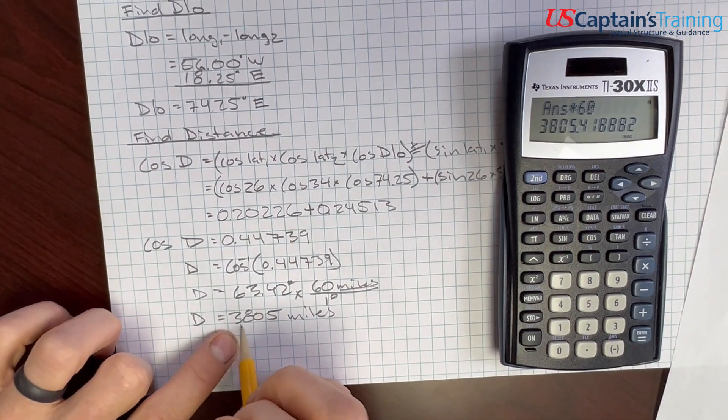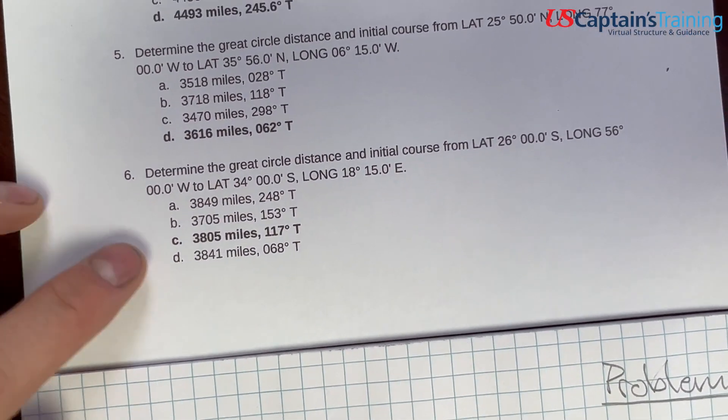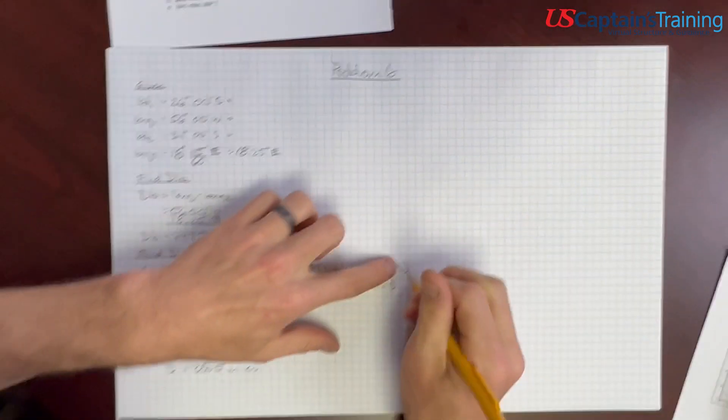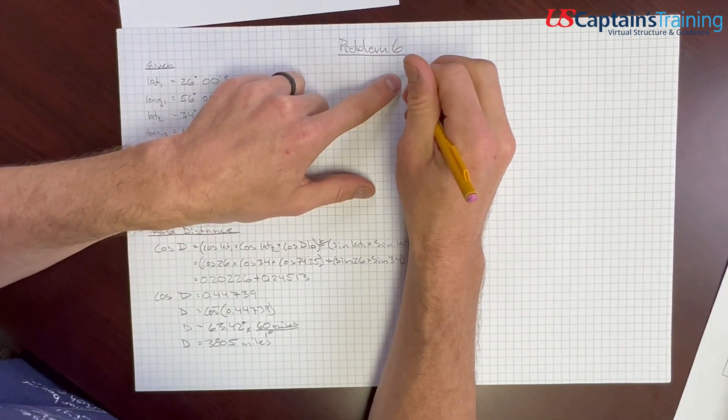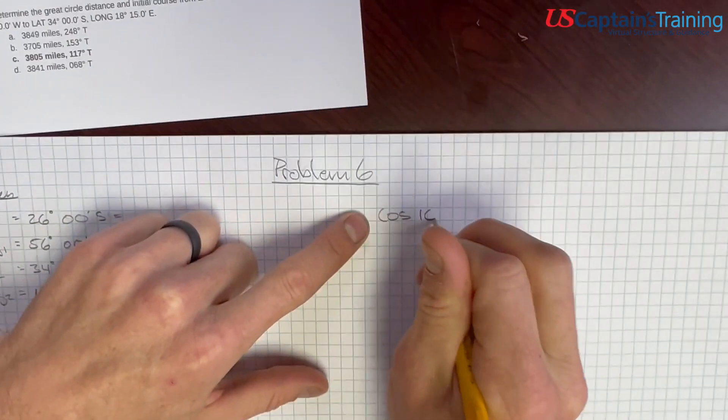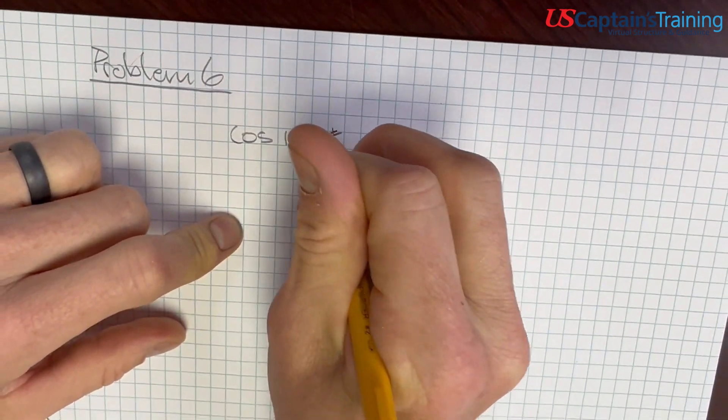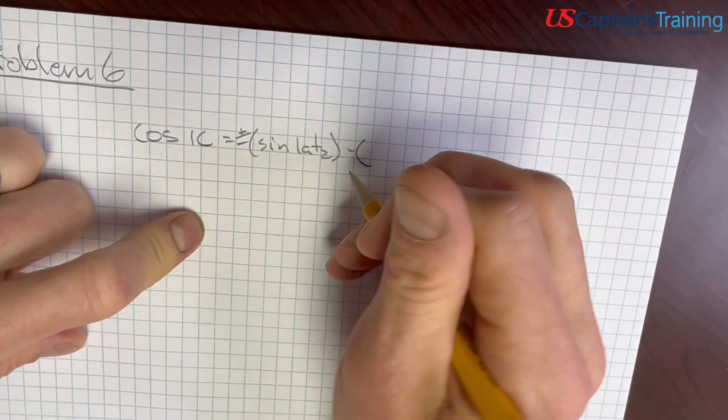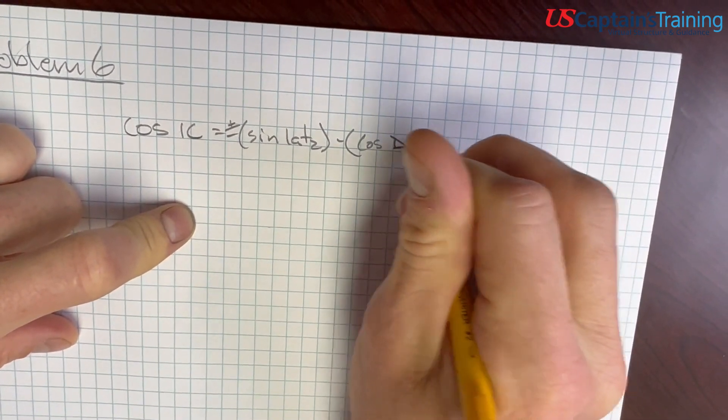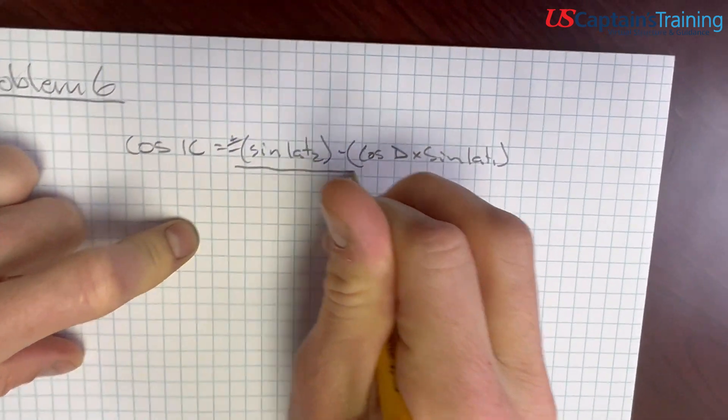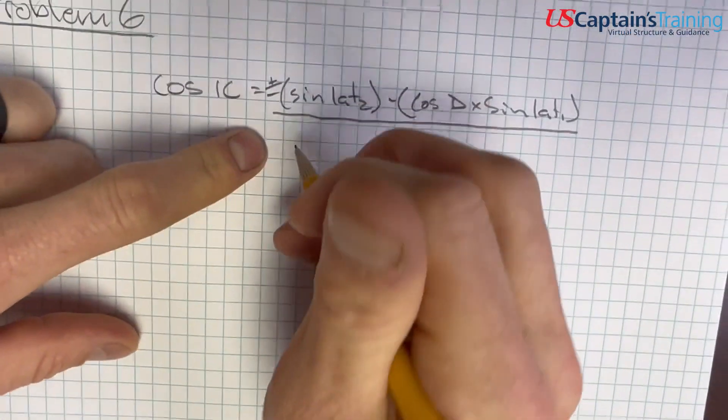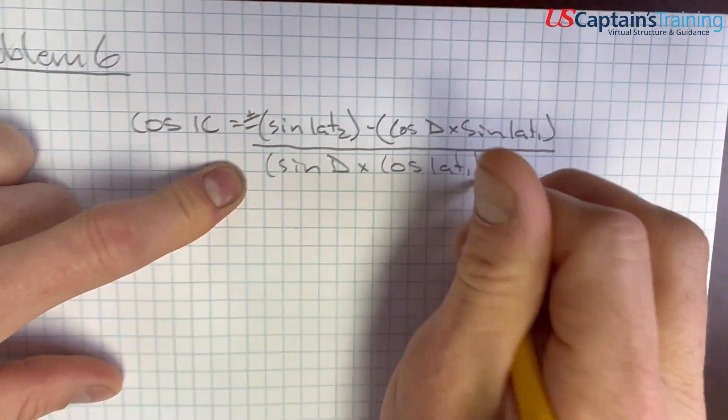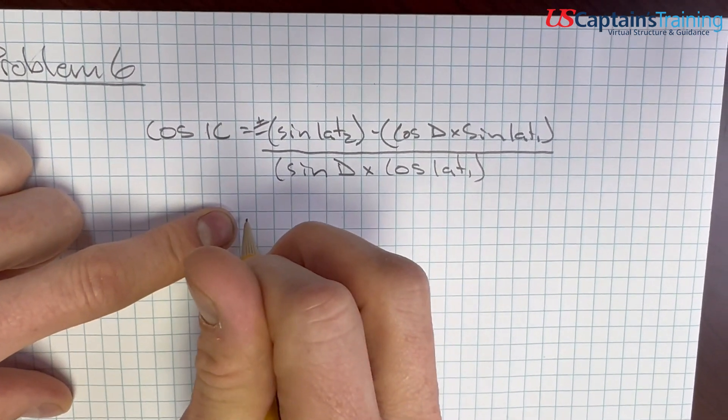You can look at the problem and see we already got it, but they want us to find initial course too. So we will. We're looking for initial course now. Cosine initial course equals, again this plus or minus, sine lat 2 minus cosine distance times sine lat 1, all of this over sine distance times cosine lat 1. Now let's start plugging these in and putting them into our calculator.